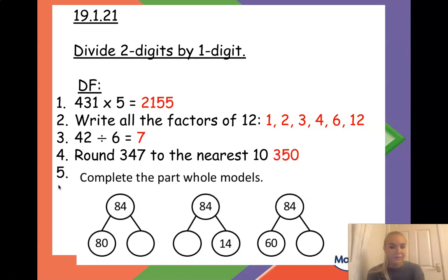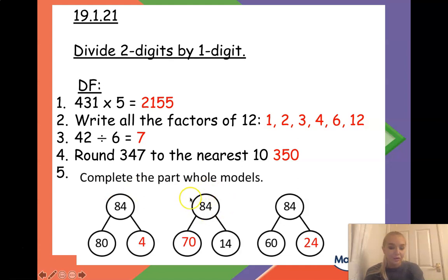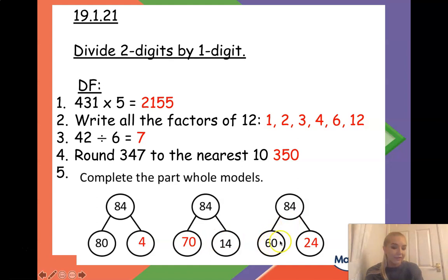Number five: complete the part-whole models. For the first one, 84 has been partitioned into 80 and 4 — all of the tens and four ones. For the second, we've used 14 ones, so we have seven tens which is 70 left over. For the final one we have six tens which is 60, and we need two tens and four ones to make 84, which is 24.